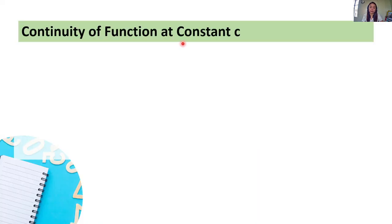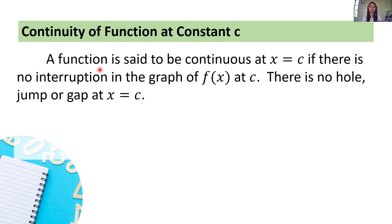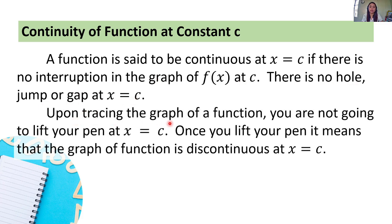Continuity of a function at constant c. A function is said to be continuous at x equals c if there is no interruption in the graph of f of x at c — there is no hole, jump, or gap at x equals c. Upon tracing the graph of a function, you are not going to lift your pen at x equals c. Once you lift your pen, it means that the graph of the function is discontinuous at x equals c.